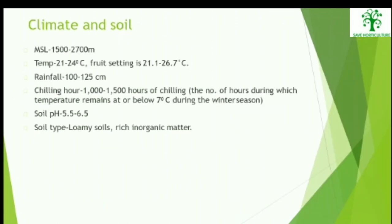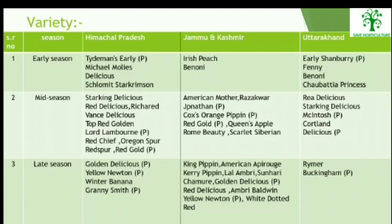The climate and soil required for the healthy productivity of apple: it requires an optimum temperature of 21–24 degrees Celsius and a rainfall ranging from 100 to 125 cm. The soil pH ranges between 5.5 to 6.5 and it requires loamy soils that are rich in organic matter for its healthy productivity.